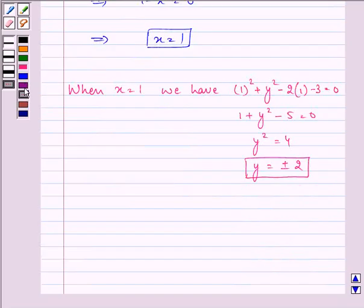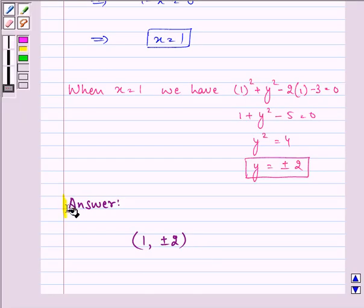Right, so the answer to the question is 1 comma plus minus 2, which are the points on the curve x square plus y square minus 2x minus 3 equal to 0 at which the tangents are parallel to x-axis. This completes the session. Hope you understood it well.